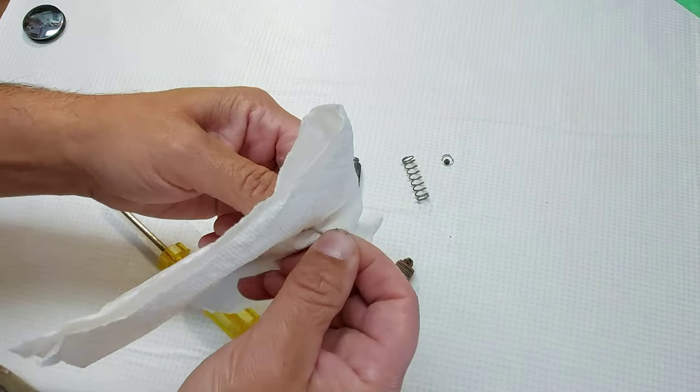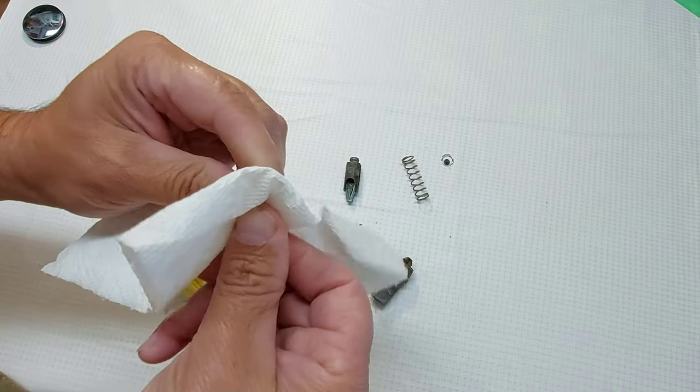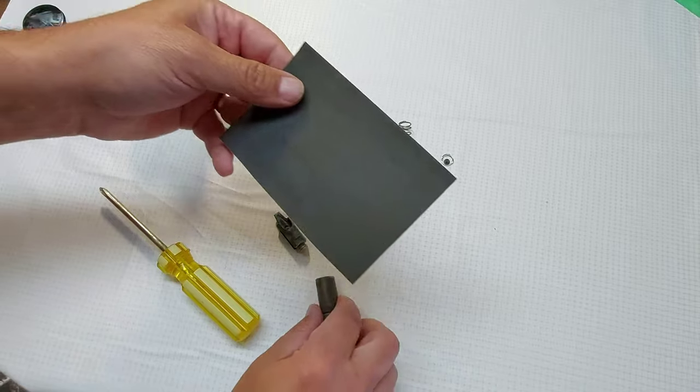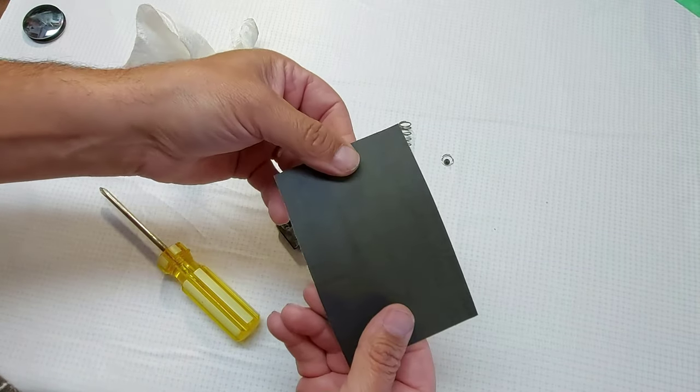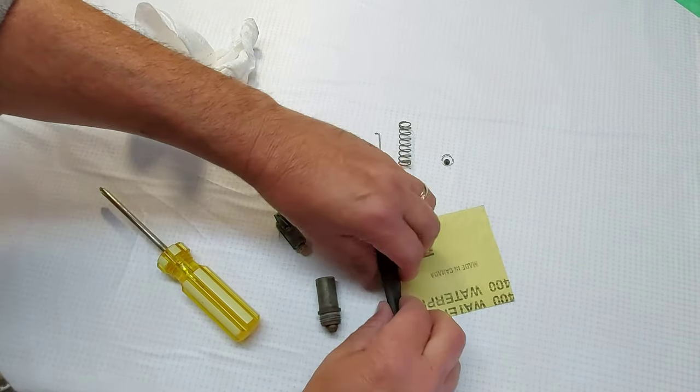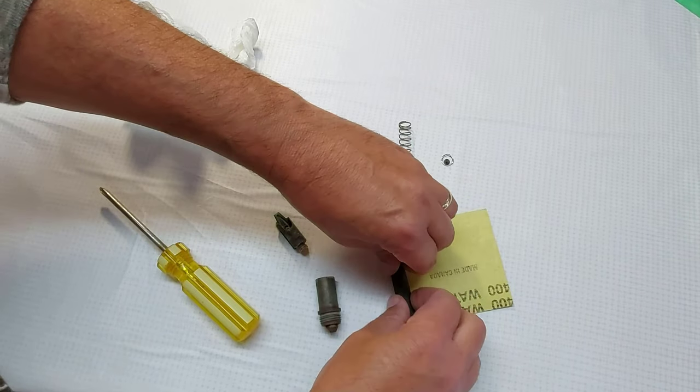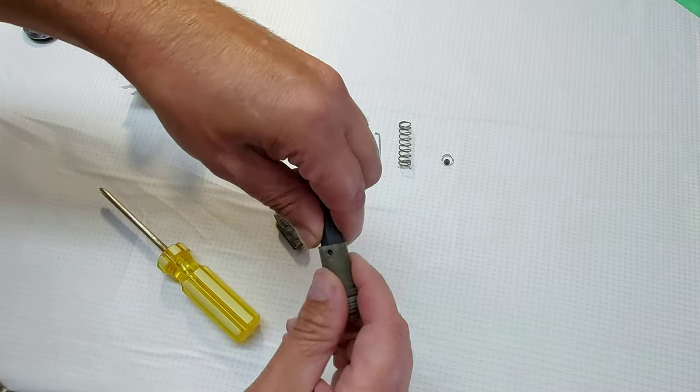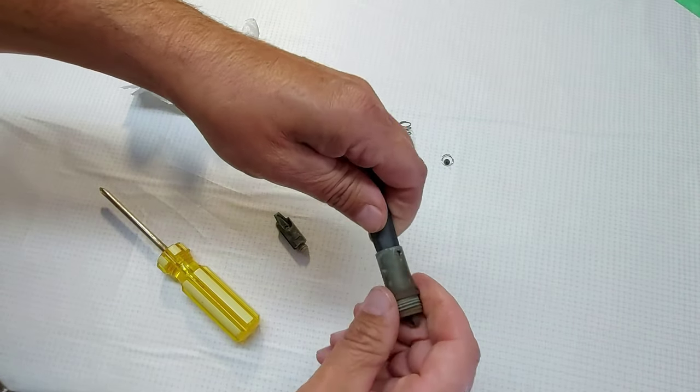So we'll just take a piece of paper towel and clean this little rod up. What we're going to do is take a piece of sandpaper. This is very fine sandpaper. We're going to roll it up so it fits in that tube. We're going to fit it in there and just spin it around inside.